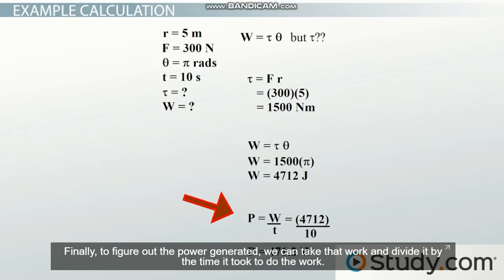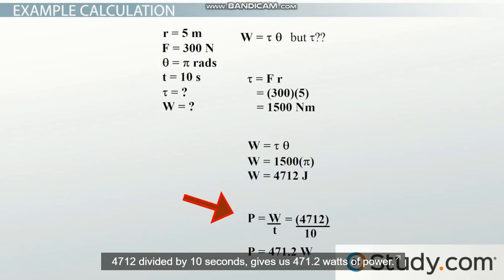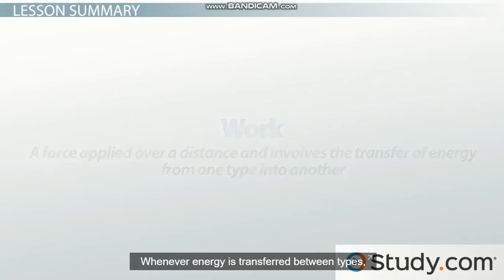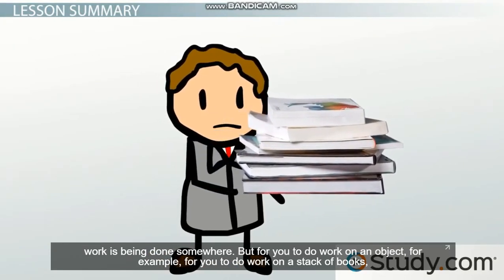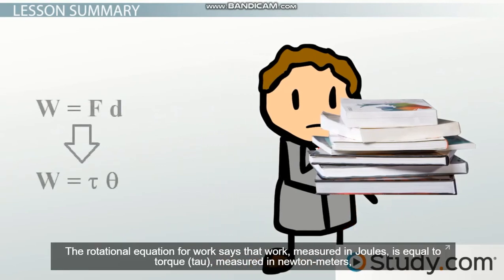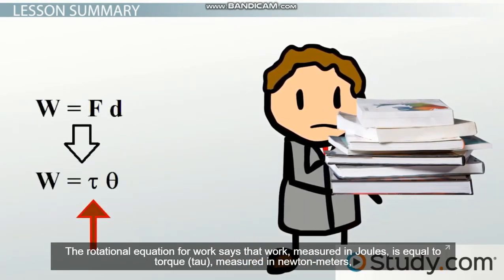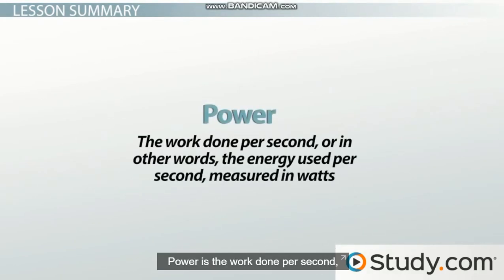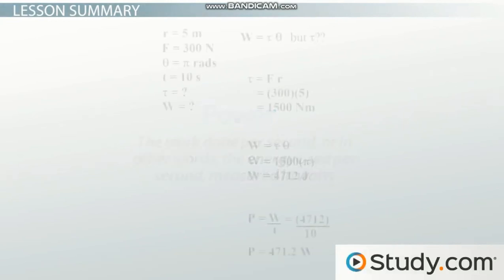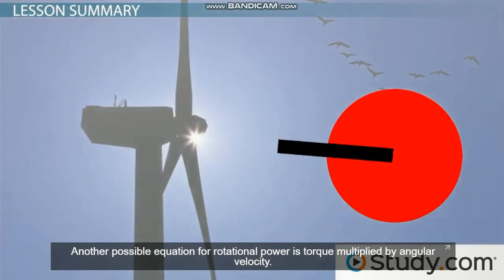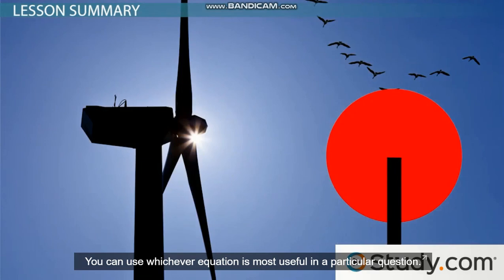Finally, to figure out the power generated, you can take that work and divide it by the time it took to do the work. 4712 divided by 10 seconds gives us 471.2 watts. And that's it, we're done. To summarize: work is a force applied over a distance and involves a transfer of energy from one type to another. The rotational equation for work says that work, measured in joules, equals torque multiplied by the change in angle. Another possible equation for rotational power is torque multiplied by angular velocity. You can use whichever equation is most useful in a particular situation.